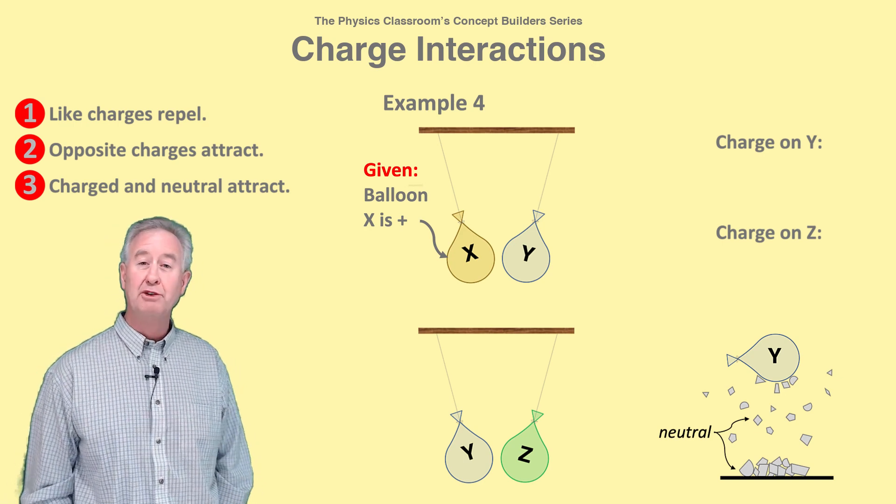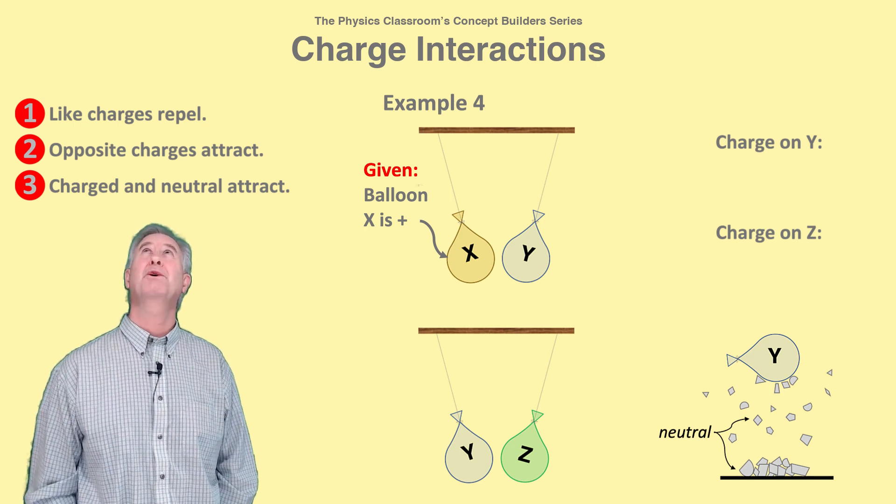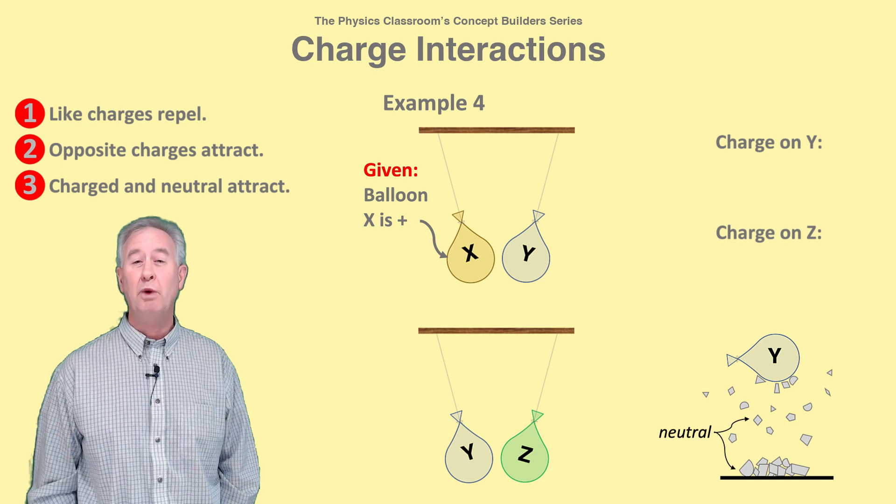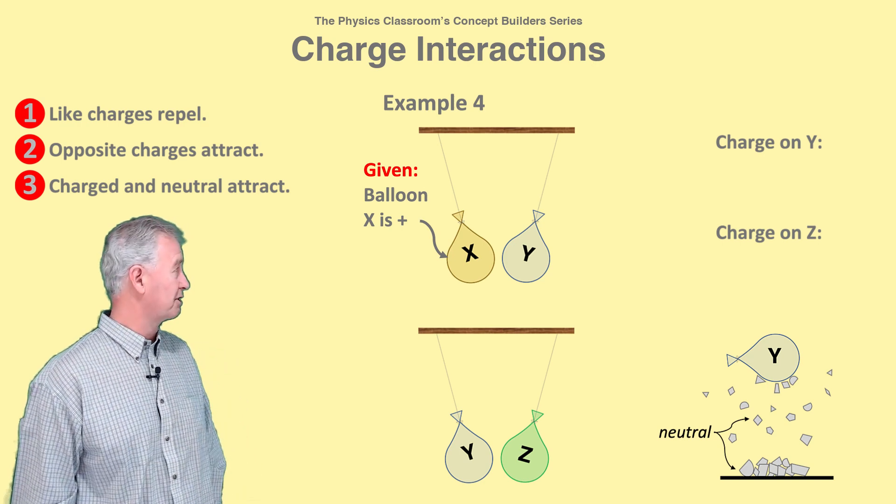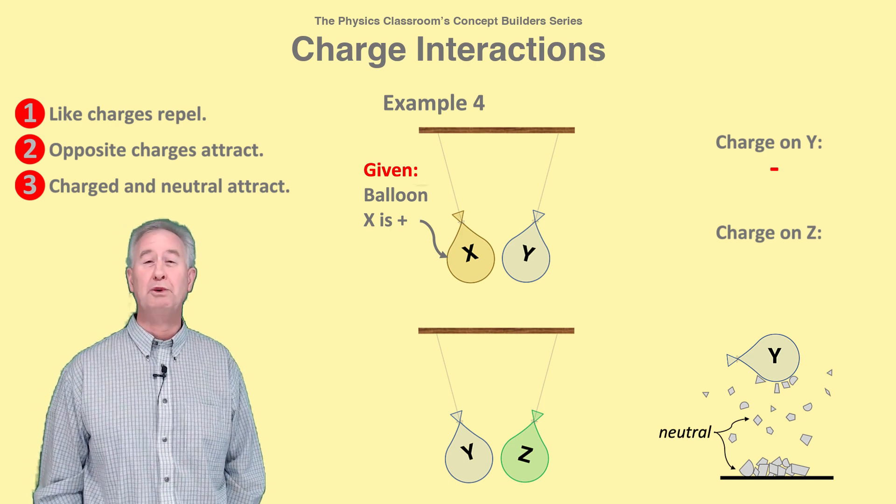The fact that Y attracts neutral paper bits means that Y must be charged according to rule three. And Y's interactions with positive X indicates that Y must have a negative charge according to rule two.